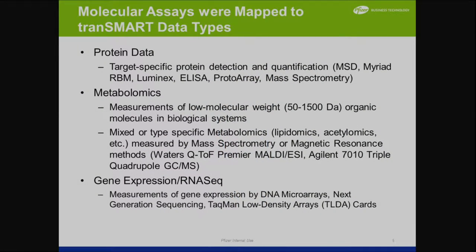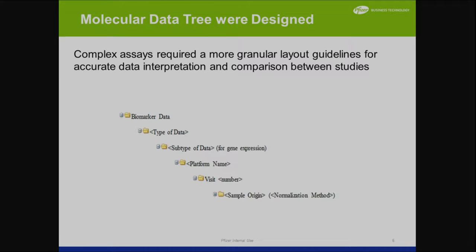Protein data has target-specific protein detection and quantification. Metabolomics has measurements of low molecular weight, mixed or type-specific metabolomics. Gene expression RNA-seq has measurements of gene expression by DNA microarrays, next-gen-seq, and TaqMan. Right now we have all of that information kind of looped into just biomarker data.